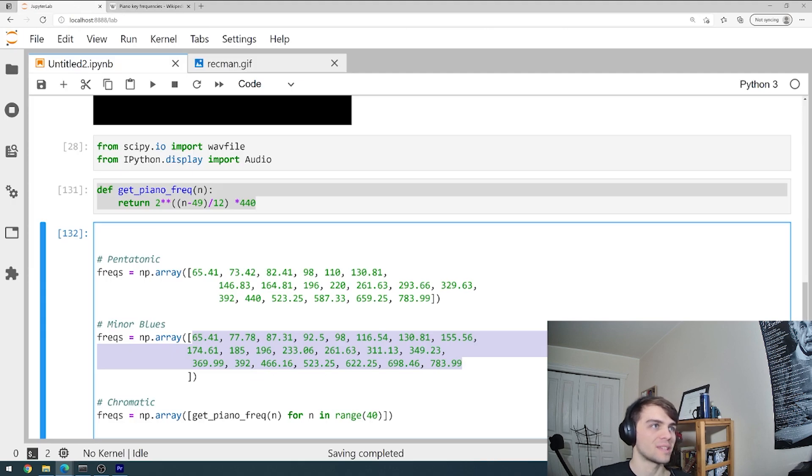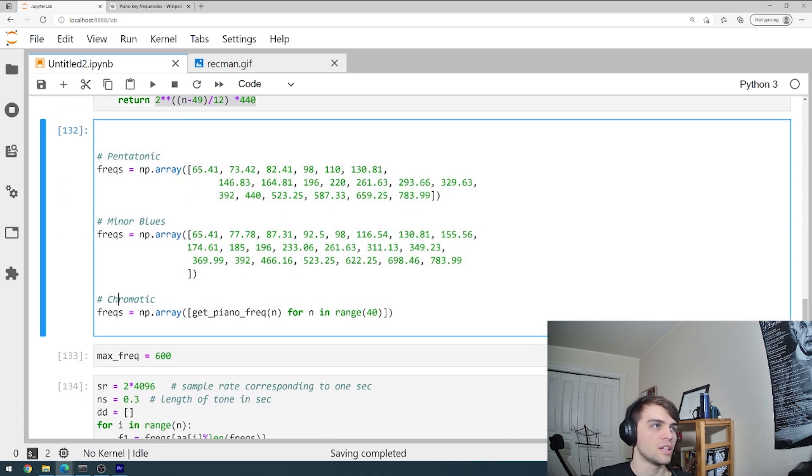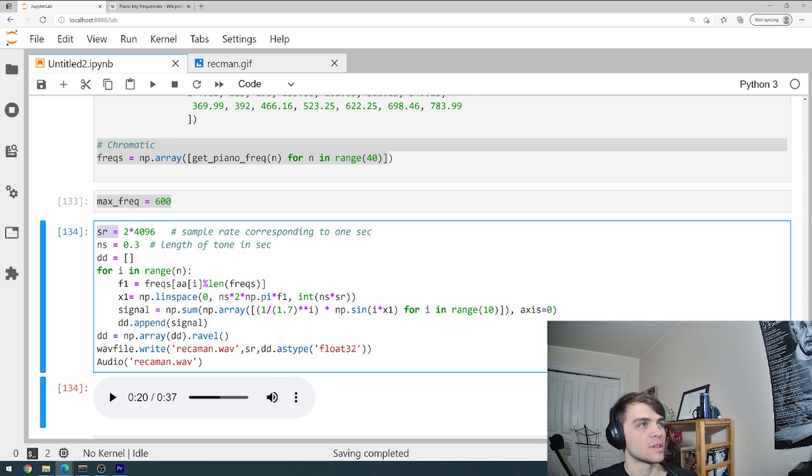And so that's what this function here, get_piano_frequency, does. It takes in a number n and it returns the corresponding frequency. And then I can use this function here, ignore these top two, to generate the frequencies of the chromatic scale. And I say, okay, I don't want to generate any notes that are higher than 600 Hertz because those notes are really obnoxious or you just can't hear them.